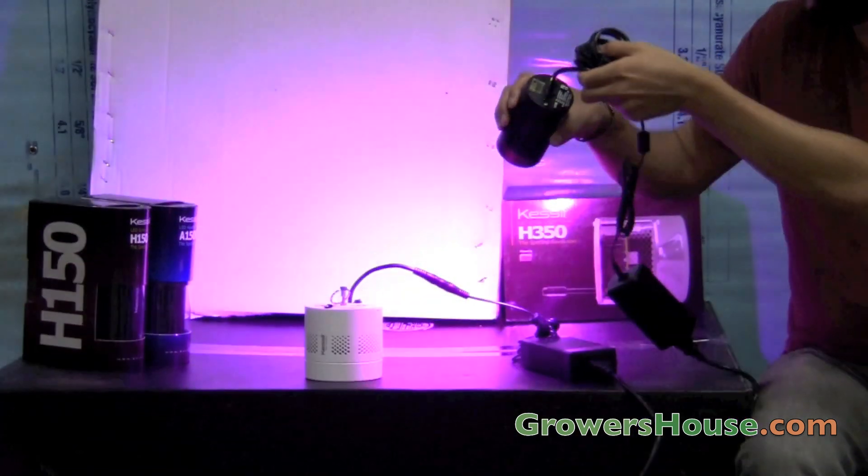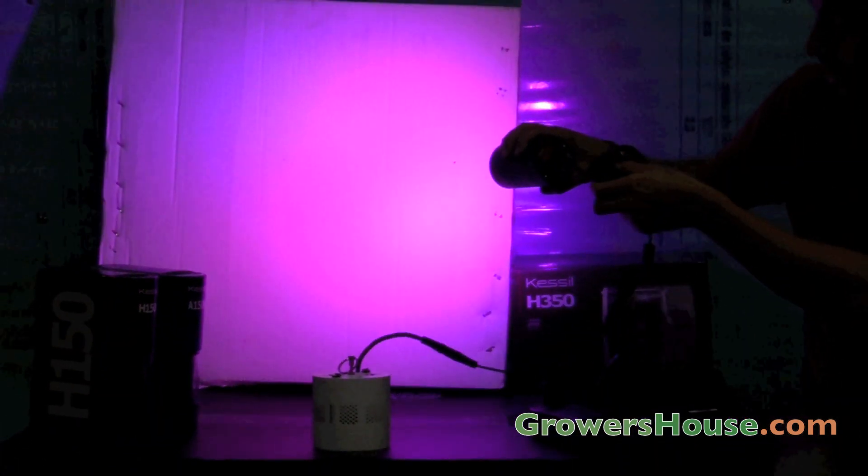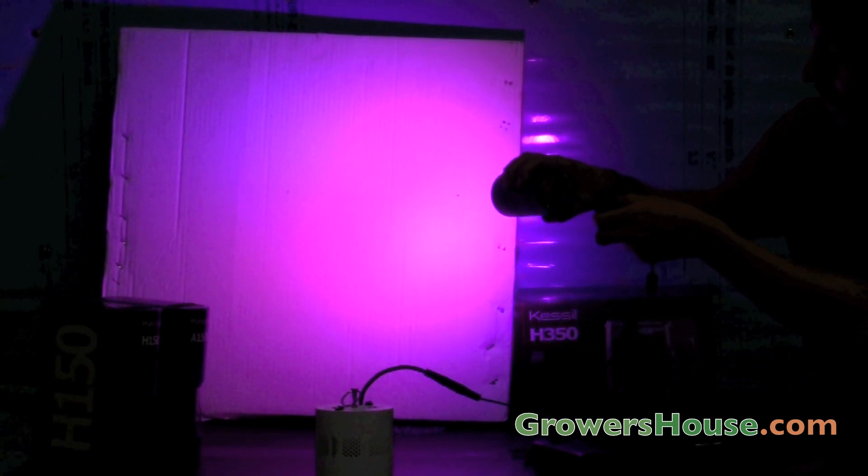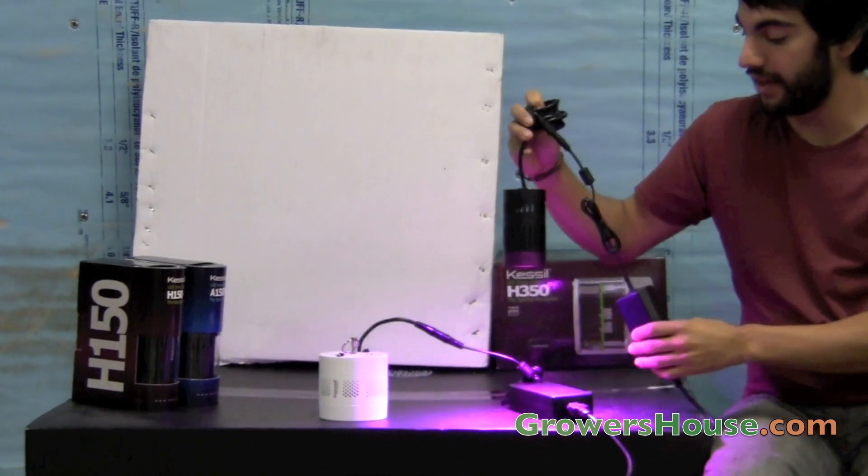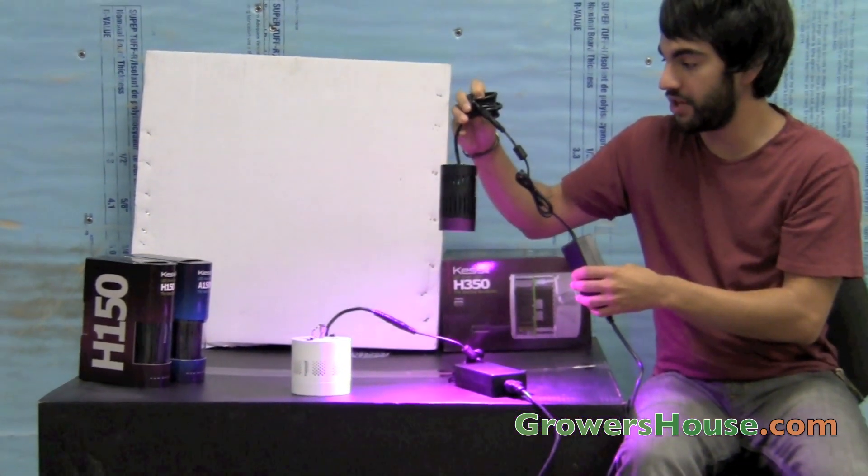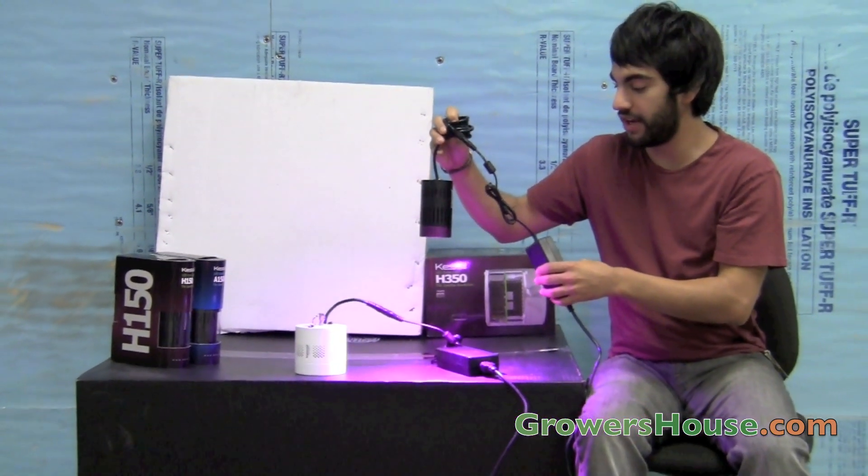Now if I hold it up here, you might be able to see the color that it's actually emitting a little bit better. And they say this light, at between 12 and 18 inches above your grow space, will have about a two foot diameter footprint.